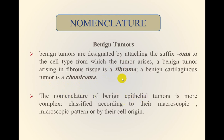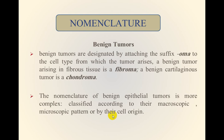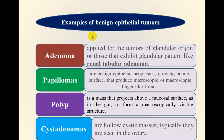The nomenclature of benign epithelial tumors — these are regarding benign tumors of mesenchymal origin. The nomenclature of benign epithelial tumors is more sophisticated and they are classified according to macroscopic and microscopic pattern, or by their cell of origin. For example, tumors that originate from glandular structures or adopt a glandular pattern of growth are called adenomas — such as renal tubular cell adenoma.